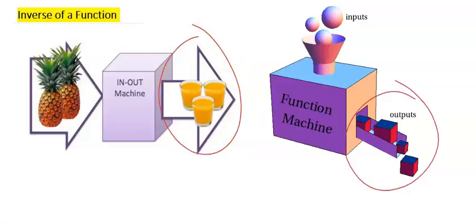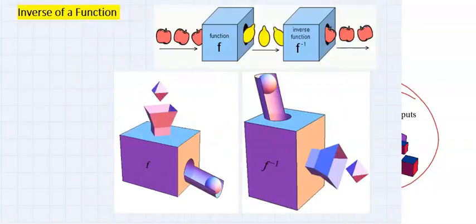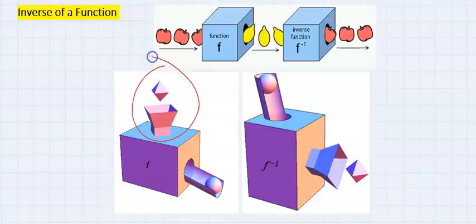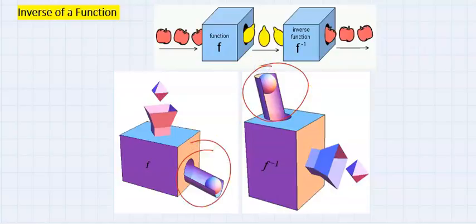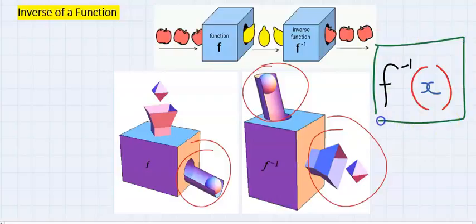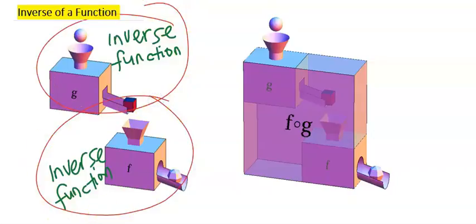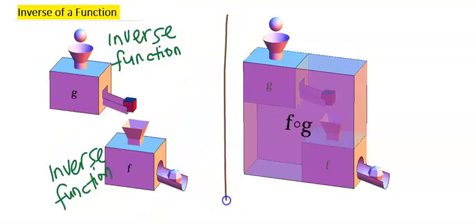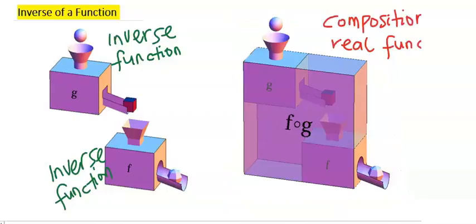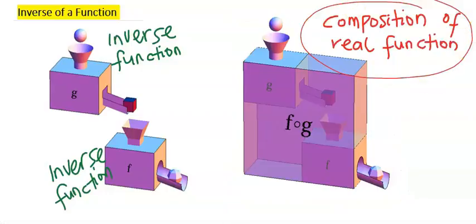which is still a product of the input. For example, if I pass an input into this function, it will generate an output. This output can be reversed or transformed back to the original input. This is known as the inverse of the function, which is denoted by this symbol. Furthermore, if there are two functions which will be reversed or inversed and need to be solved simultaneously, such transformation is called composition of real functions, which has been treated in a separate video.